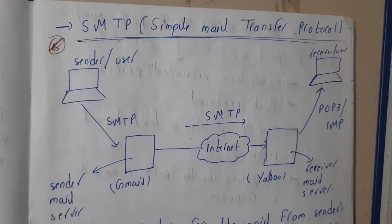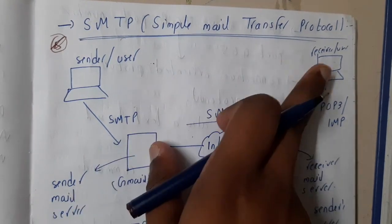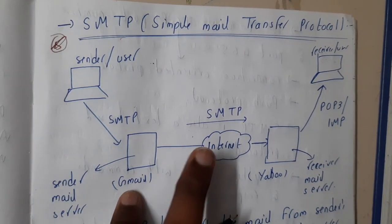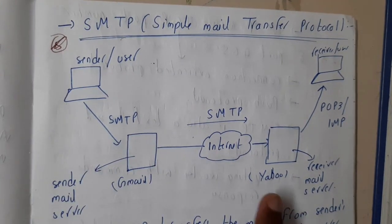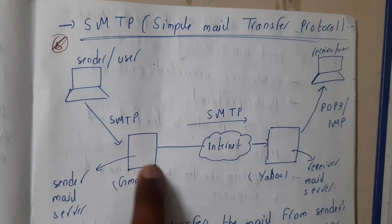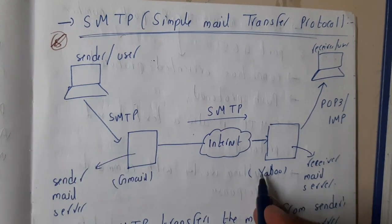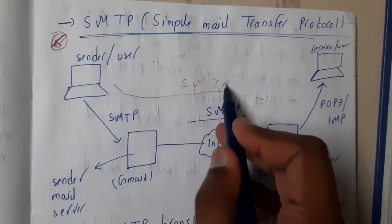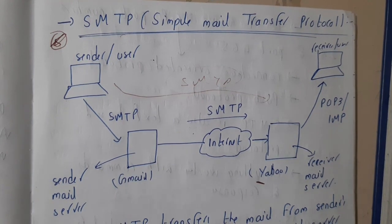SMTP stands for Simple Mail Transfer Protocol. Assume the sender wants to send a mail to the receiver. For example, one is using Gmail and the other is using Yahoo. You send the mail via Gmail, it travels over the internet, and arrives in your friend's Yahoo inbox. The entire message transfer up to the receiver's mail server is handled by SMTP.